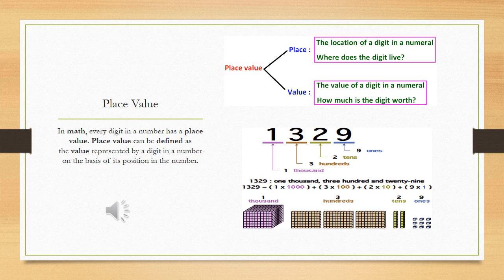For further discussion, if we are breaking the place value term into two words: place and value. Place means the location of a digit in a numeral - where does the digit live. Place tells us where the digit is standing. And value of a digit in a numeral means how much the digit is worth. First, place tells us the location of the number, and then value tells us the worth of it.